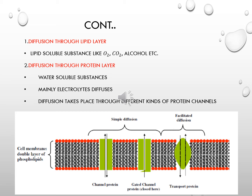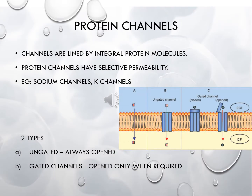Diffusion through the protein layer occurs through different kinds of ion channels or protein channels. Protein channels are lined by integrative protein molecules and the diffusion of water, electrolytes and other substances which are insoluble in lipids and hence impermeable through the lipid layer occurs through the protein channels. The characteristic feature of protein channels is that they are selectively permeable — each channel permeates only one type of ion. For example, sodium channels allow only sodium ions to pass through.